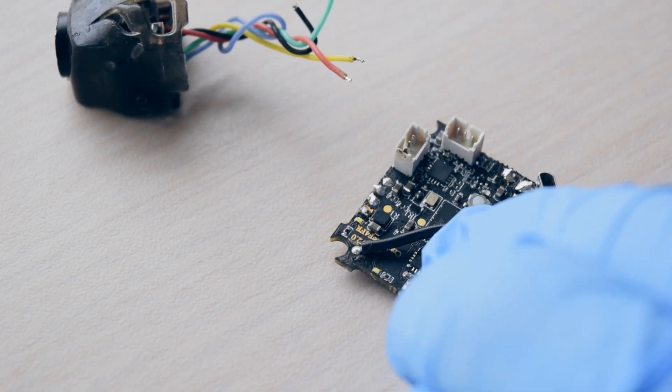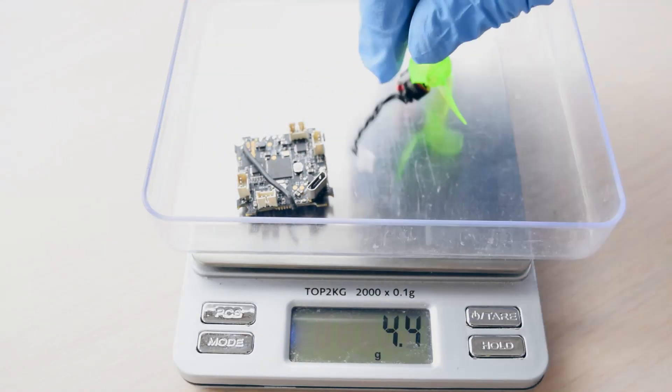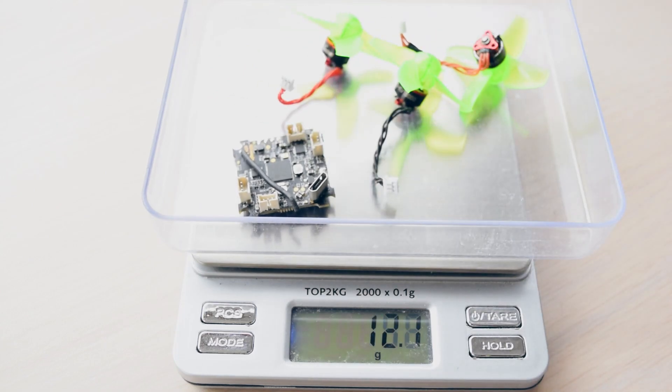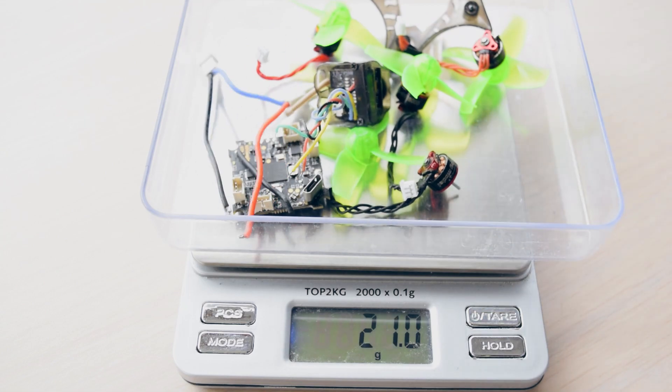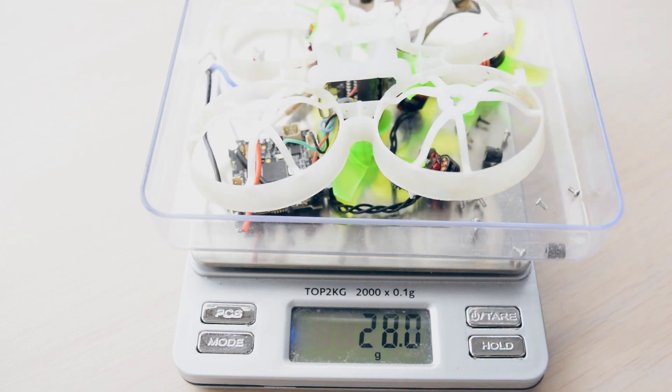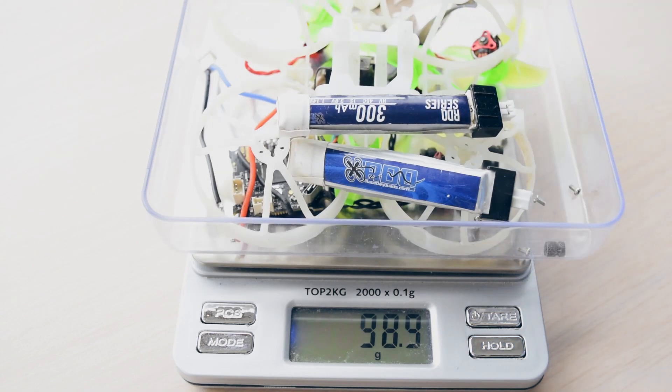Now would be the last good chance to weigh everything so that we can compare before and after, so here I am just tossing back everything that I've taken off so far onto this scale. Without a battery, it comes in at 28.3 grams, and with these two cells, it weighs 43.7 grams.